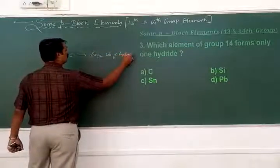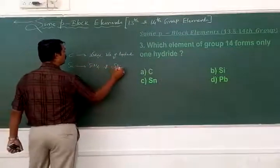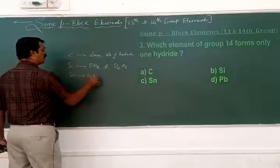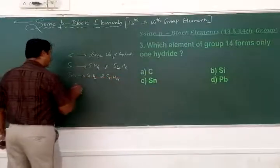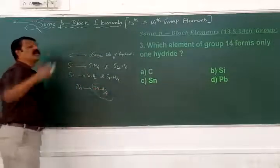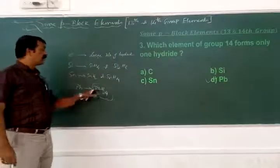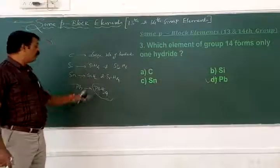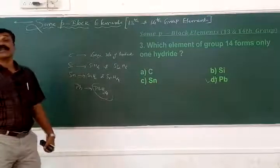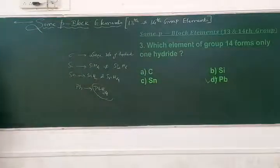Silicon has silicon tetrahydride and disilicon hydride among others. Tin has SnH₂ and SnH₄ — at least two hydrides. But lead has only one hydride, PbH₄. Lead (plumbous element) exists with only one hydride formula, PbH₄, whereas tin and silicon have at least two, and carbon has a very large number of hydrides.